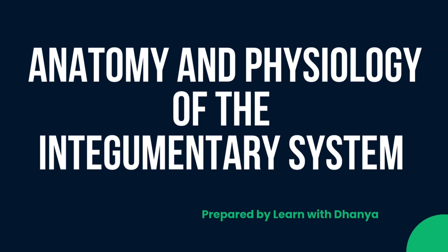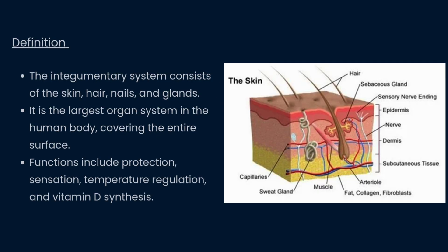Today we will be discussing the anatomy and physiology of the integumentary system. This PPT is made exclusively for candidates preparing for interviews, with easy points to help you recollect and remember at the time of the interview. The integumentary system consists of skin, hair, nails, and glands. It is the largest organ system in the human body, covering the entire surface. Functions include protection, sensation, temperature regulation, and vitamin D synthesis.